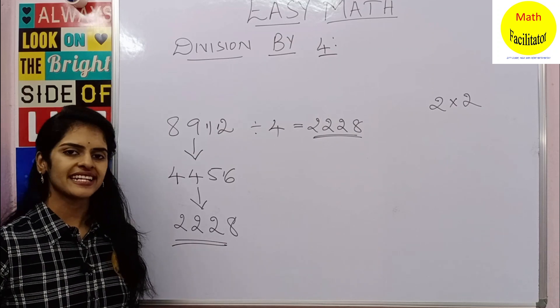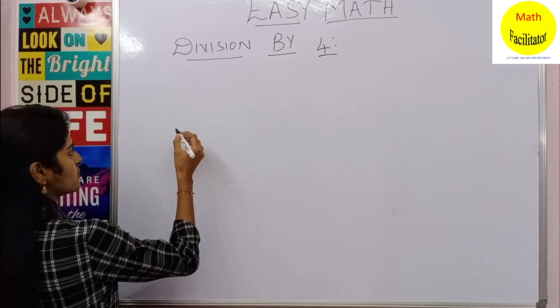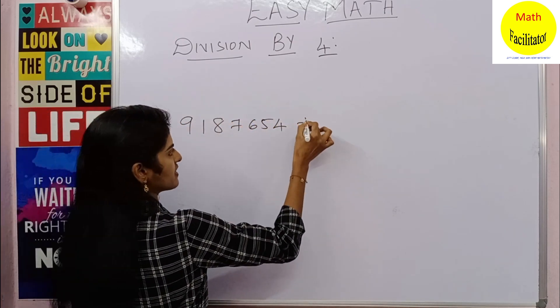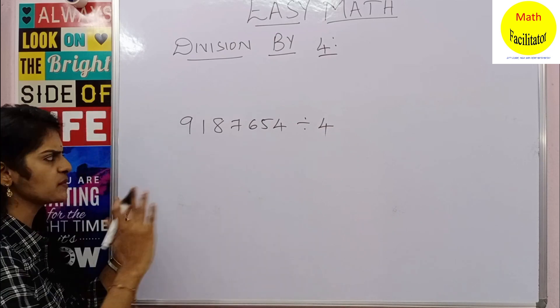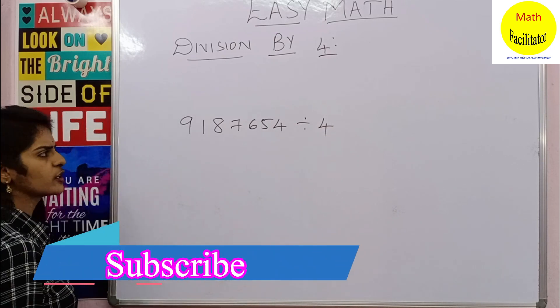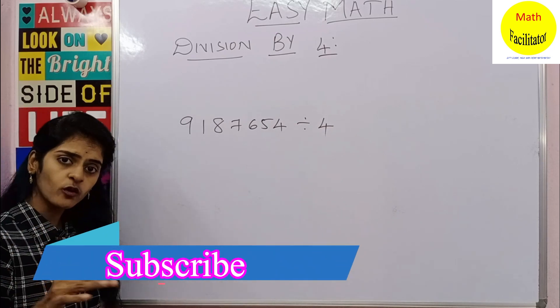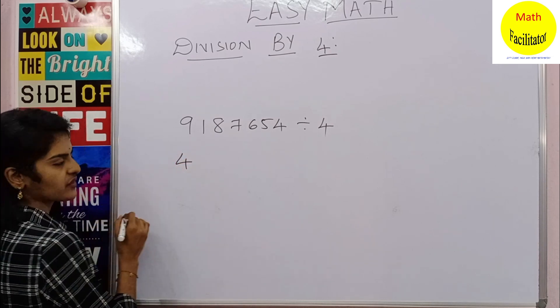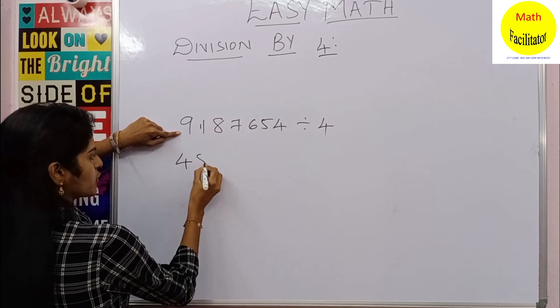Let me take another example, taking a bigger number. So 9187654 divided by four, okay? Some number divided by four. So how do you do it? I said divide by two, two times, okay?